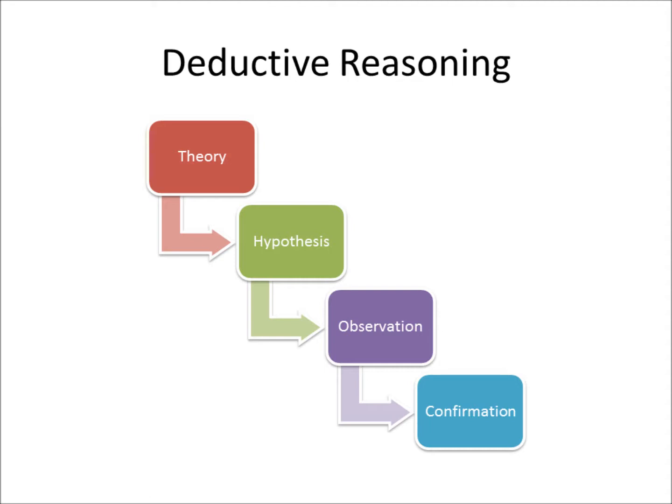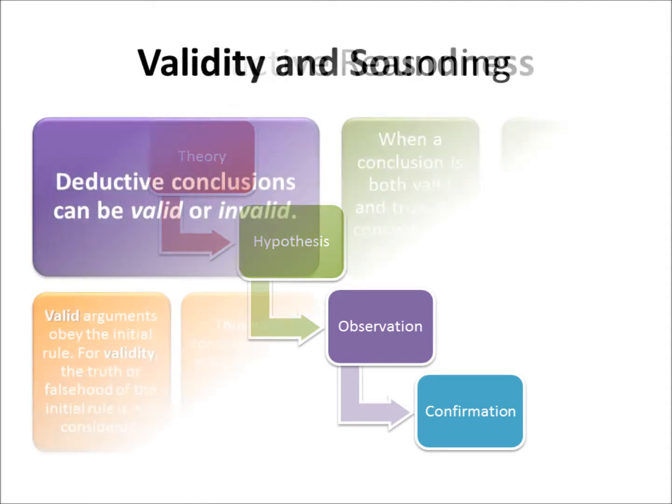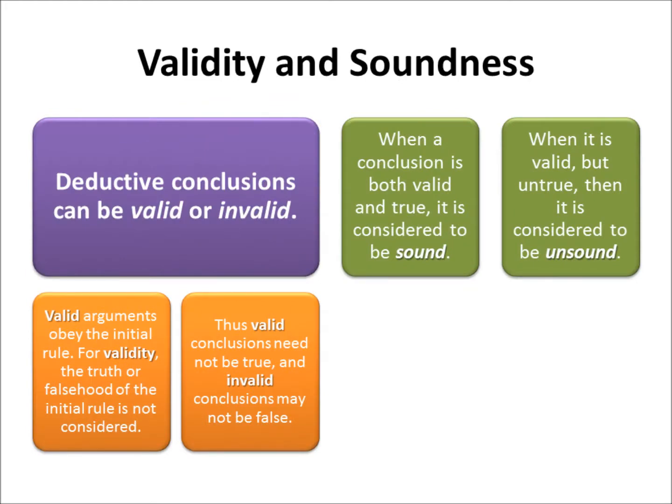Using deductive reasoning is usually a credible and safe form of reasoning, but is based on the assumed truth of the rule or law on which it was founded. Deductive conclusions can be valid or invalid. Valid arguments obey the initial rule; for validity, the truth or falsehood of the initial rule is not considered. Thus, valid conclusions need not be true, and invalid conclusions may not be false. When a conclusion is both valid and true, it is considered to be sound. When it is valid but untrue, it is considered to be unsound.